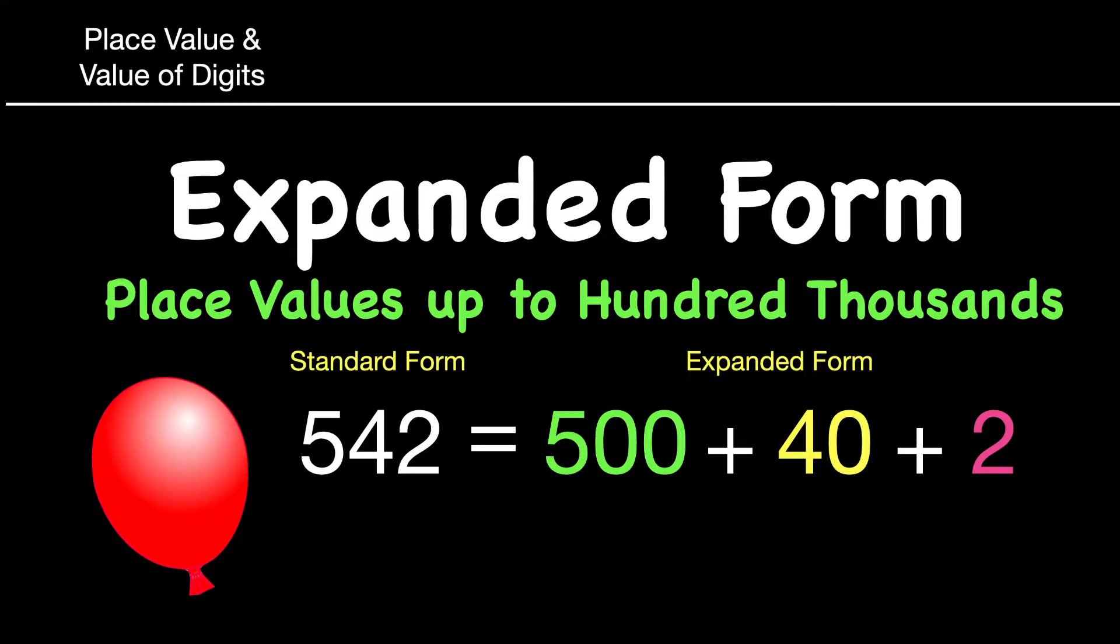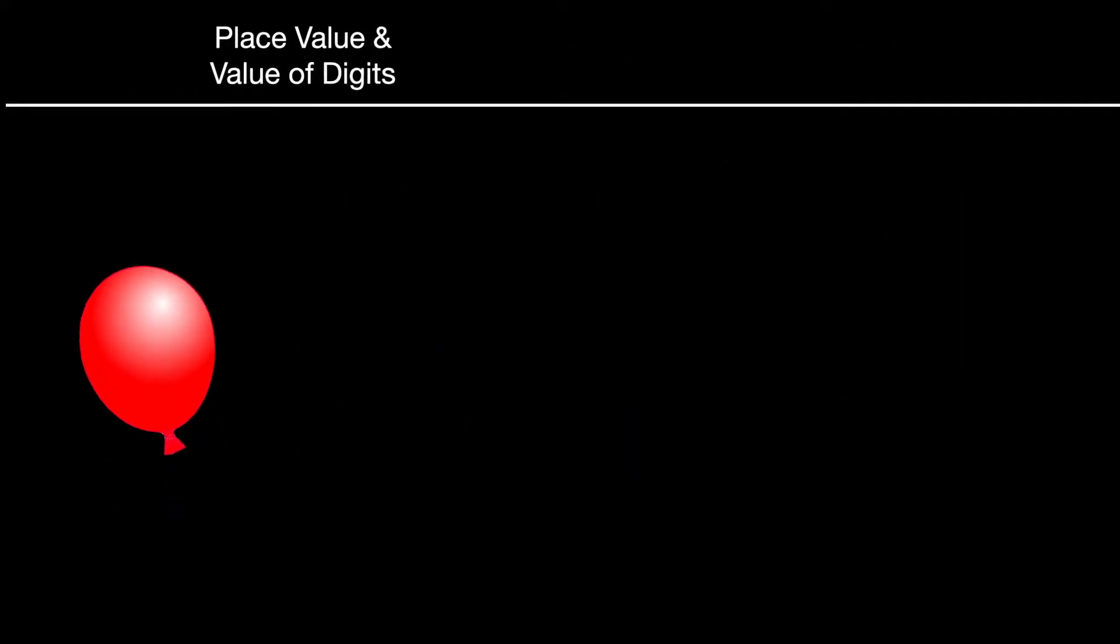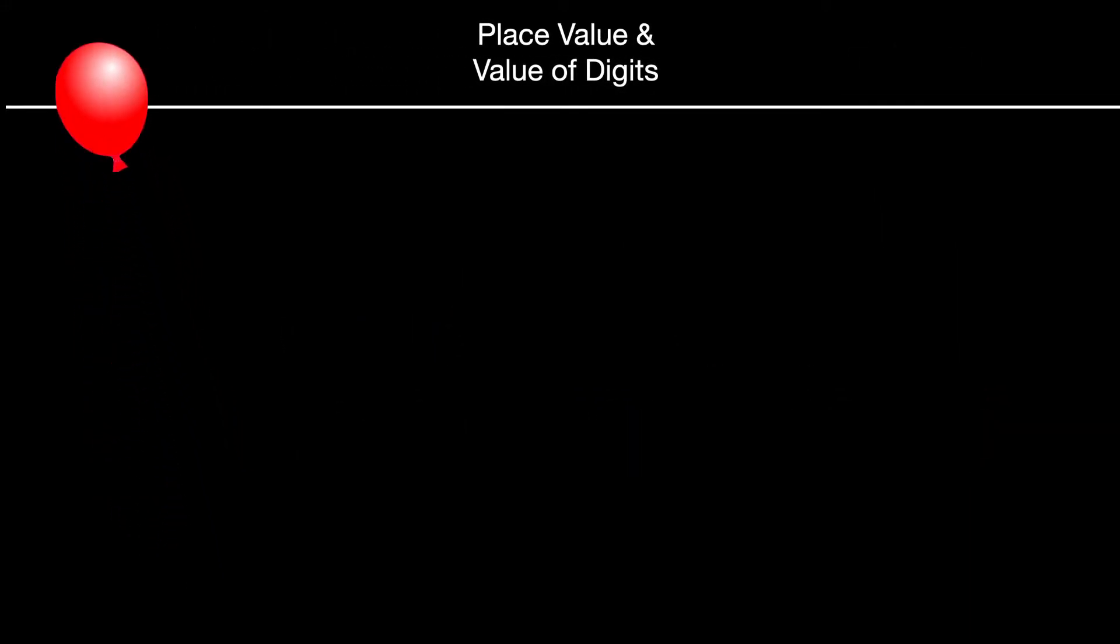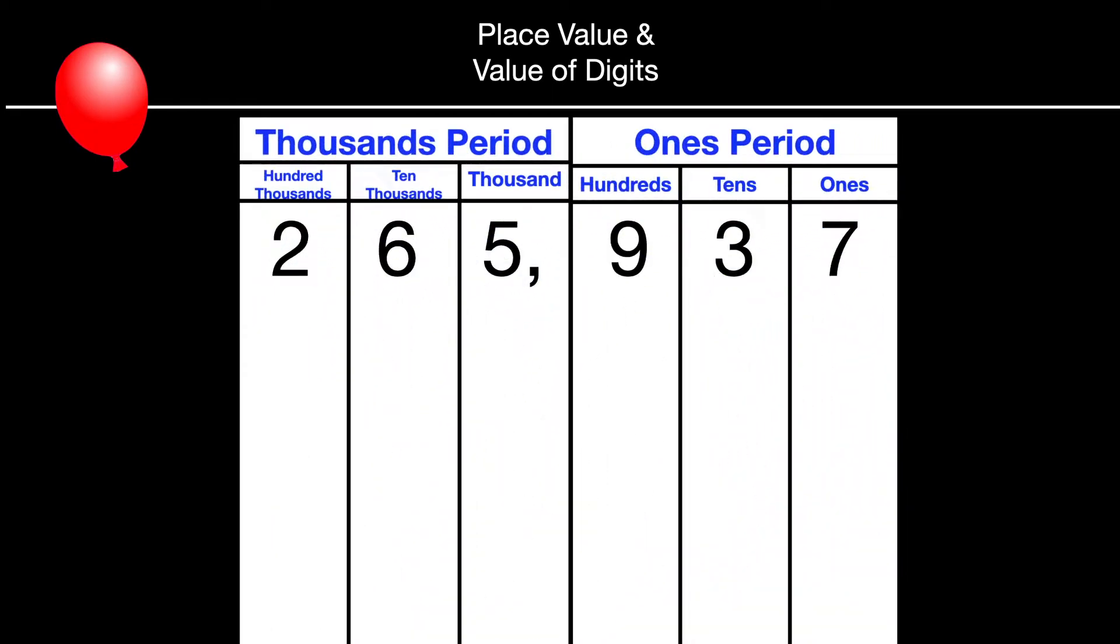We'll be talking about place values and the value of digits. We'll go over the three steps for expanded form, and then we'll solve some problems. And we'll be dealing with place values up to the hundred thousands today, but not every example will be that. Let's show a place value chart, and the number on that chart does go up to hundred thousands. That number is 265937.